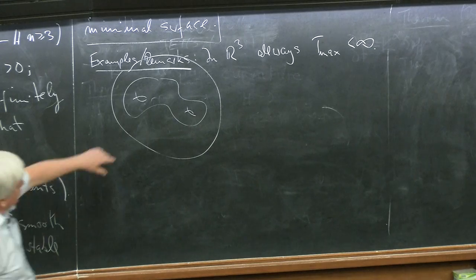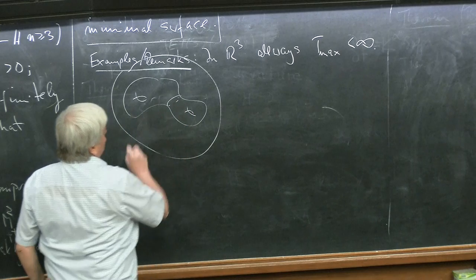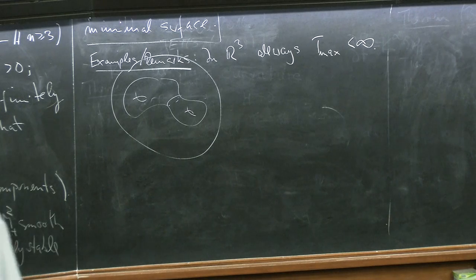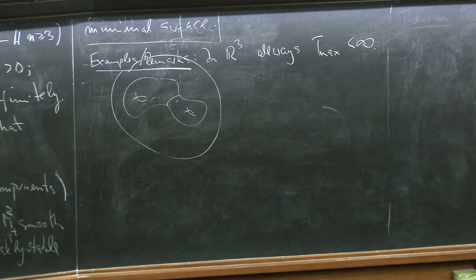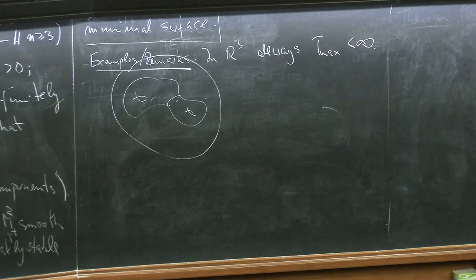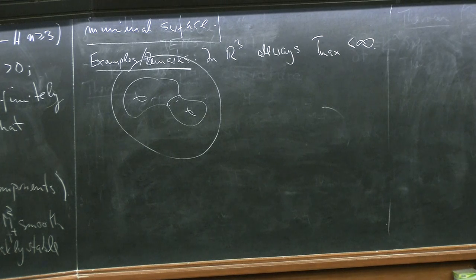In R^3, T_max is always finite: any surface can be enclosed by a sphere that dies in finite time. As an example, a very thin axially symmetric torus in R^3 has positive mean curvature, and under the flow it will develop a neck and undergo surgery — one can check this corresponds to the picture described above, with the flow eventually shrinking all components to points.